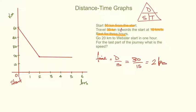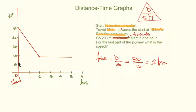Last of all, we're going to go 20 kilometers towards the start and do it in one hour. So this brings us from our rest point at 20 kilometers all the way down to zero. We're at five hours right now, and one hour later brings us to six hours. So that's just a quick line going down to zero at six hours.